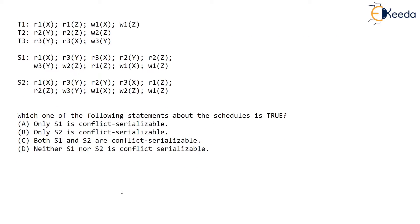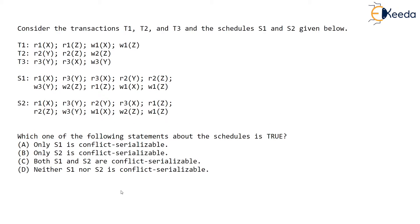I'm sure you can solve it on your own, but let me solve it — you will see such questions asked in GATE regularly. Let's check S1. S1 has three transactions T1, T2, T3. The first operation is R1X, so I will write it as RX under T1.